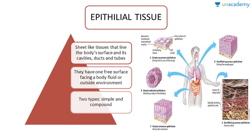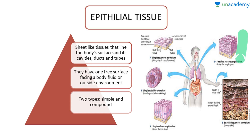First of all we will learn about epithelial tissue. These are sheet-like tissues that line the body cavities, ducts and tubes. They have one free surface facing a body fluid or the outside environment, as depicted in the figure. There are two types generally: simple and compound.